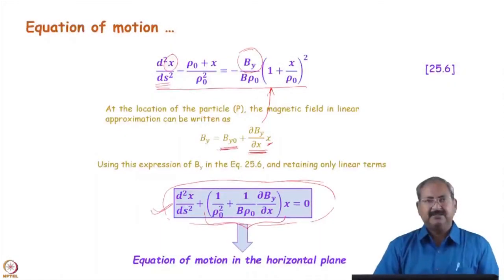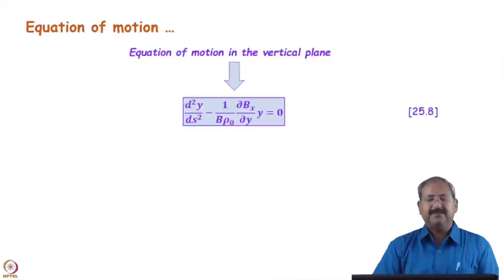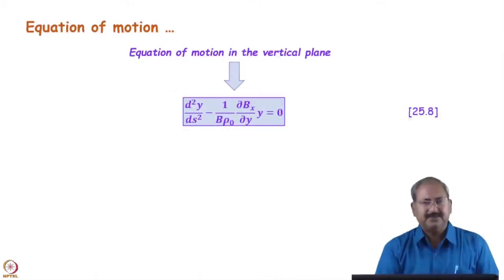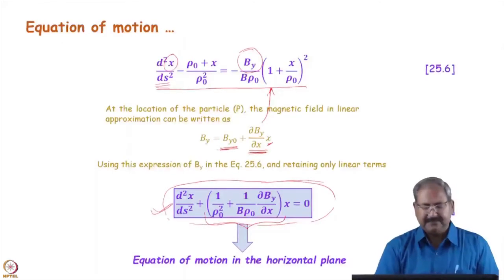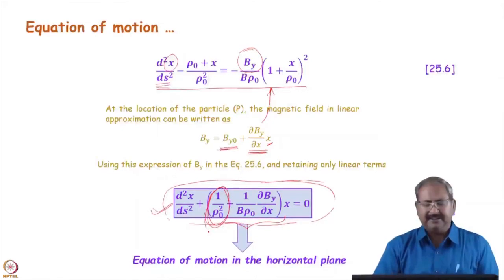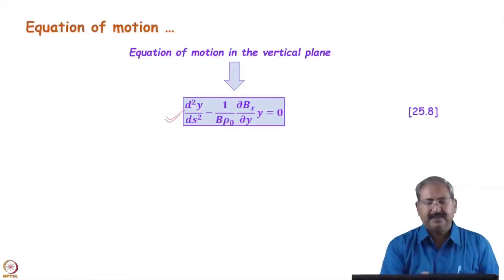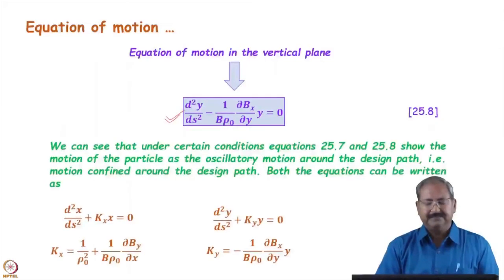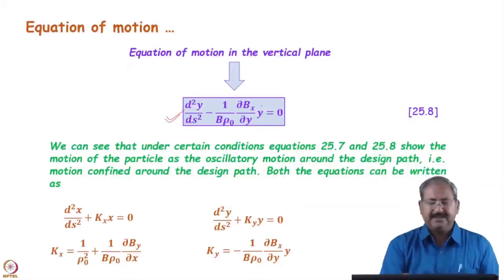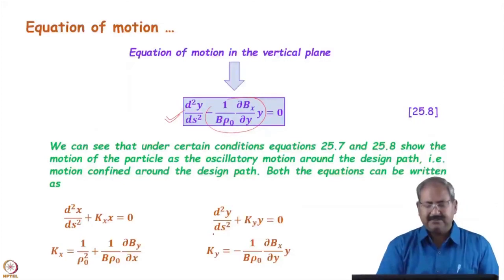This is the equation of motion in the horizontal plane. In the vertical plane, because there is no bending, the 1/ρ₀² term which shows the bending of the trajectory will not be there, and only the gradient-related term will be present in the vertical plane. So in the vertical plane we get the equation of motion accordingly. This quantity can be written as ky, so our equation of motion will be d²y/ds² + ky·y = 0.